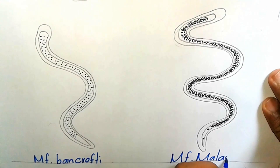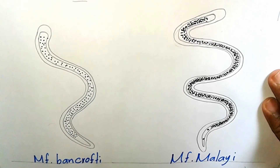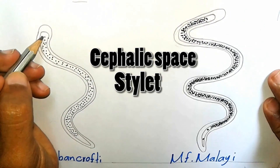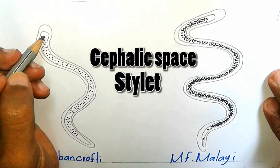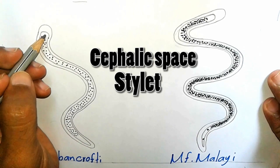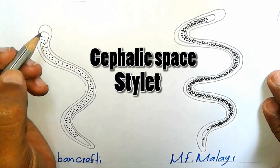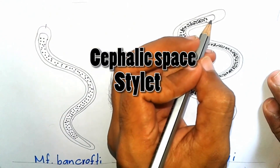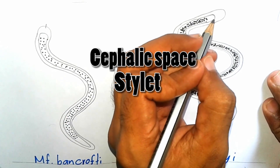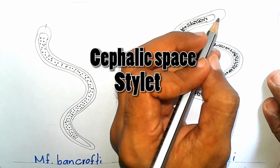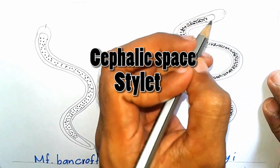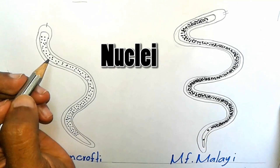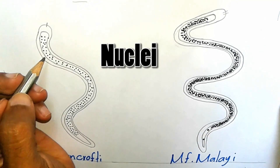Regarding the microfilarial area: in Wuchereria bancrofti, the cephalic space is as long as broad and carries 1 stylette. In Brugia malayi, it is longer than broad and carries 2 stylettes. The body nuclei are round, distinct, and well separated.